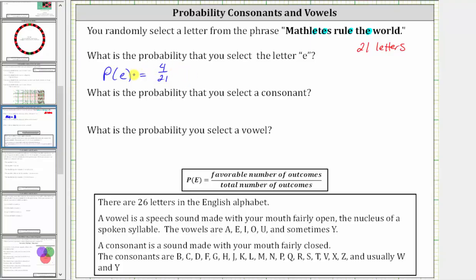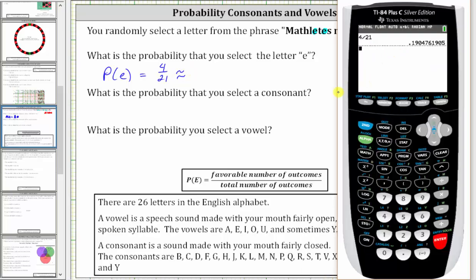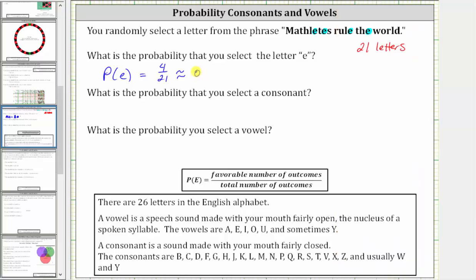And this fraction doesn't simplify, so this is the exact probability, but let's also show the probability as a decimal and a percent. If we round to four decimal places, 4 divided by 21 is equal to 0.1905, which is equal to 19.05%.